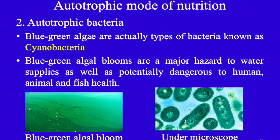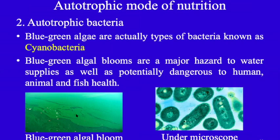Blue-green algae are actually types of bacteria known as cyanobacteria. Blue-green algal blooms are a major hazard to water supplies and potentially dangerous to humans, animals, and fish. You can see blue-green algal blooms in ponds in villages. If algal bloom has taken place, the algae consume large amounts of oxygen from the pond, and fish or other organisms living inside can die due to the loss of oxygen in the water. Under the microscope, blue-green algae look like this.